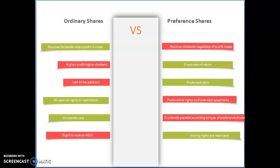With ordinary shares, the shareholders are the last to be paid out. Whereas with preference shares, they have preference claim on any company assets if the company goes into liquidation.